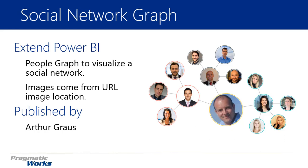You can also bring in images. The images need to be located at a URL location, so as long as the URL points to an image, you can bring it in and use it as part of the social network graph very easily. It's actually a very simple visual to use. The one thing that might be a little time consuming is setting up your data in the proper way, so I will show you how my data is set up so you can use it as a reference guide.